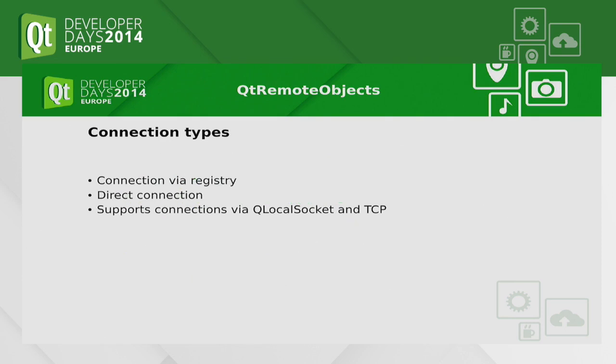We have several types of connections. We have a registry mode, which is similar to a daemon — you have a central registry where servers register which objects they provide, and the client can then connect to the server which holds the objects it wants to acquire. Then we have a direct connection mode where you can specify the URL of your server or client. Right now we support two connection types: connections via QLocalSocket and QTCPSocket. We specify the difference in the connection URL, but we plan to change it to make more transport layers possible.